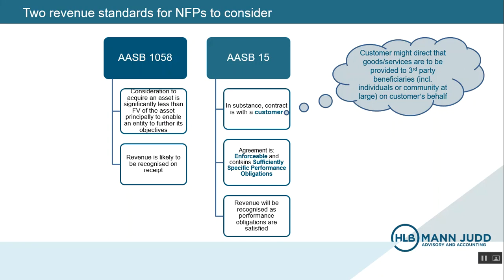There are two main standards that govern income recognition for not-for-profits. AASB 1058, income of not-for-profits, is, as the name suggests, a standard specifically applicable to not-for-profit entities. AASB 1058 covers transactions where the consideration to acquire an asset is significantly less than fair value, principally to enable an NFP to further its objectives.